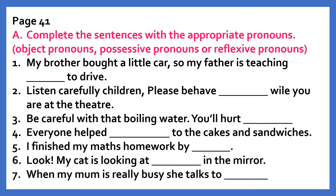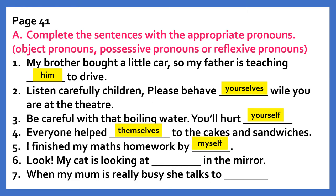First sentence: My brother bought a little car, so my father is teaching dash to drive. Answer: him. Second sentence: Please behave dash while you are at the theatre. Answer: yourselves. Third sentence: Be careful with that boiling water. You will hurt dash. Answer: yourself. Fourth: Everyone helped dash to the cakes and sandwiches. Answer: themselves. Fifth: I finished my maths homework by dash. Answer: myself.